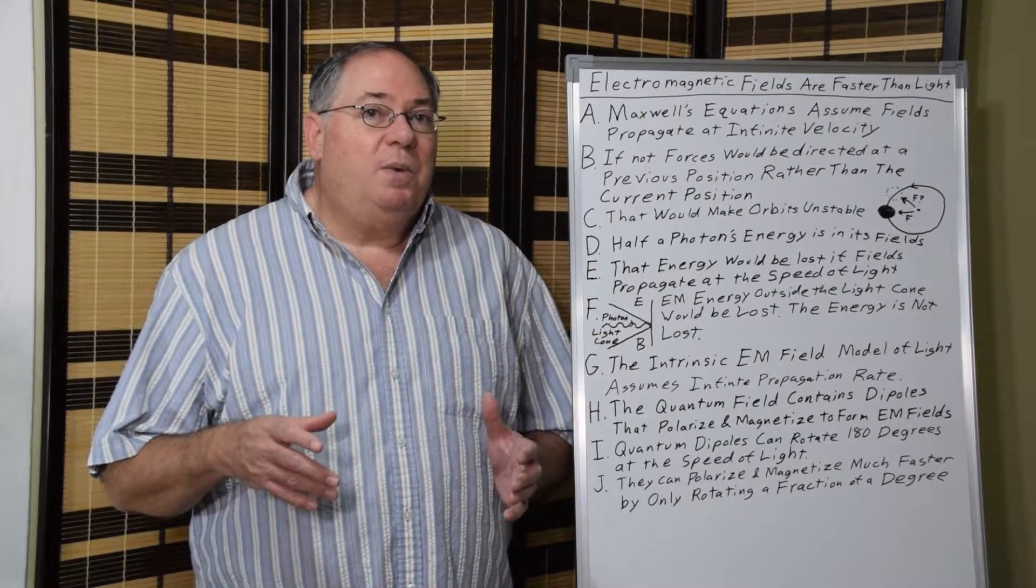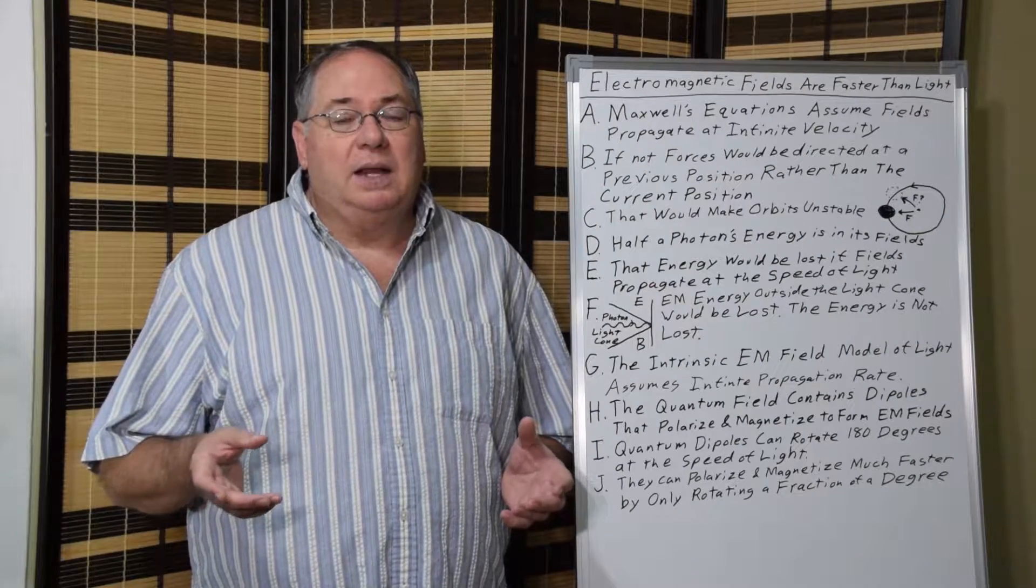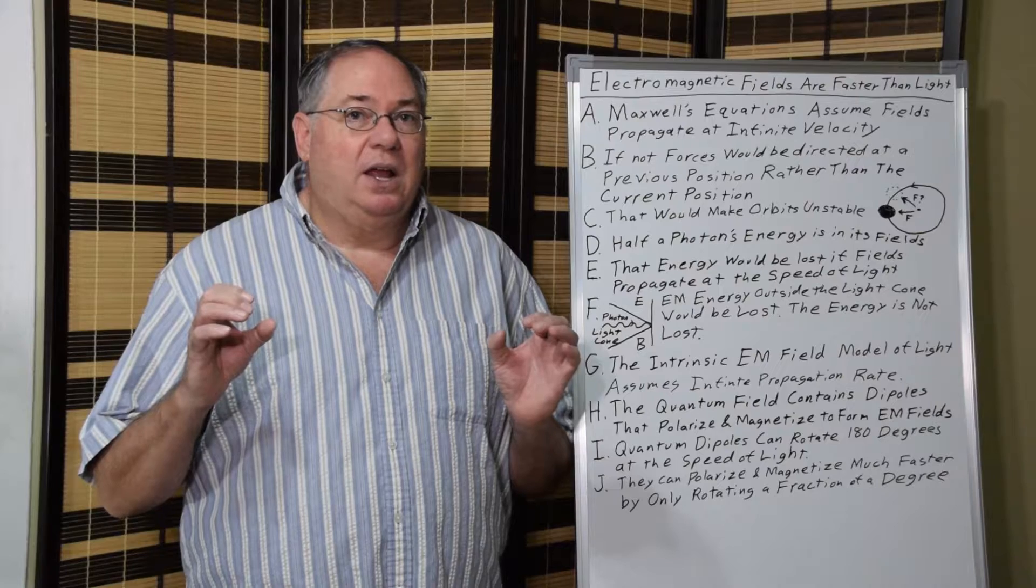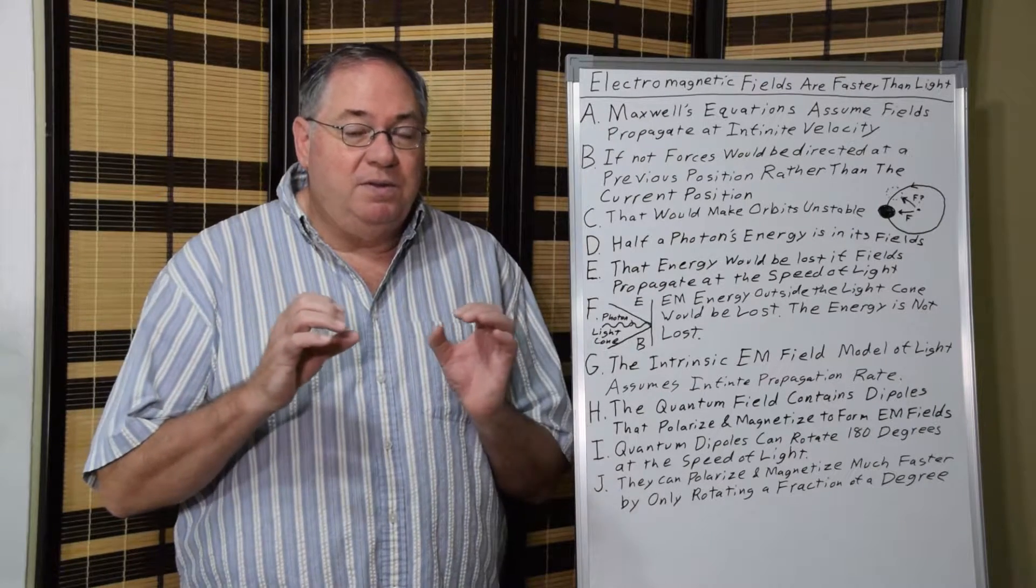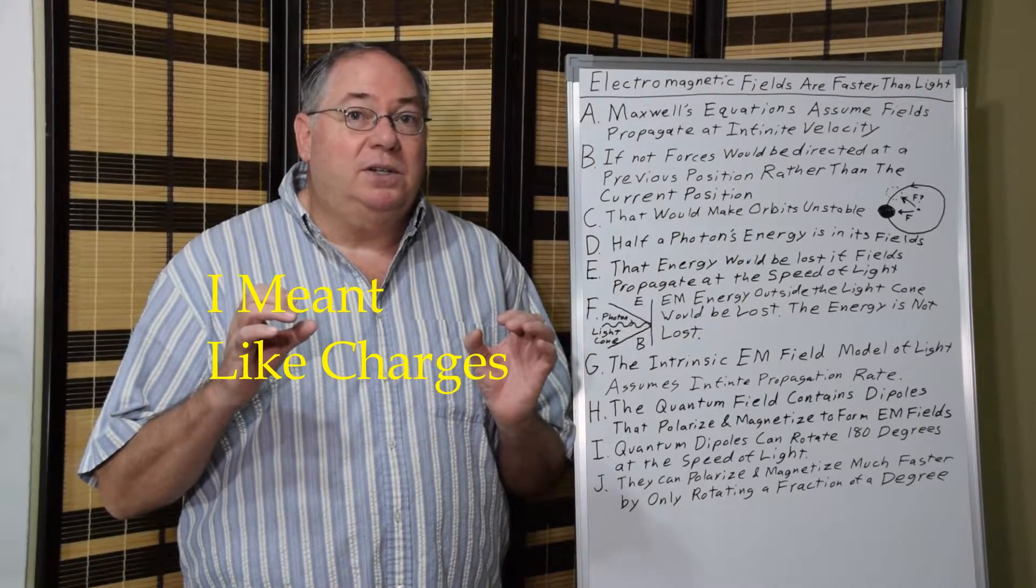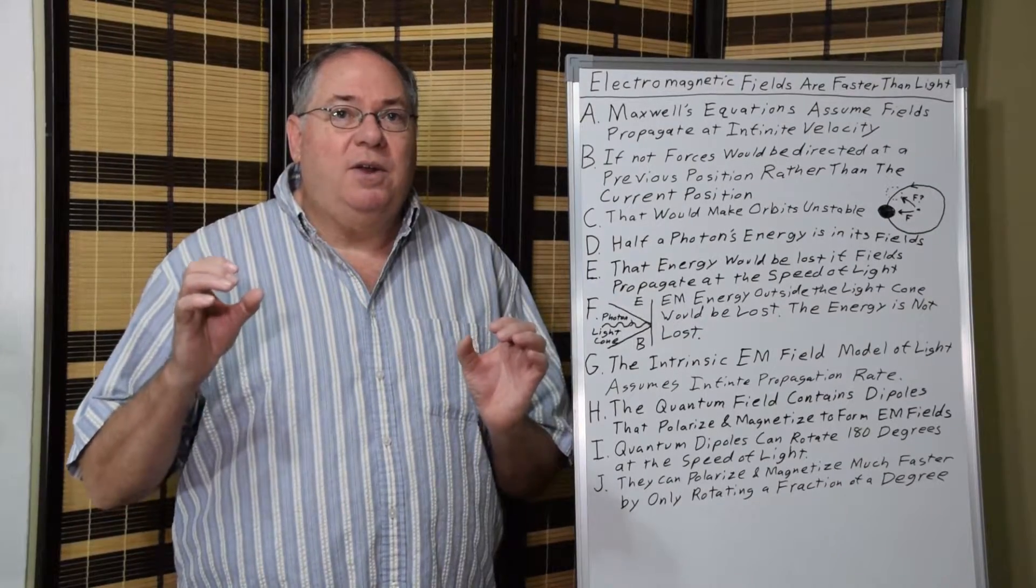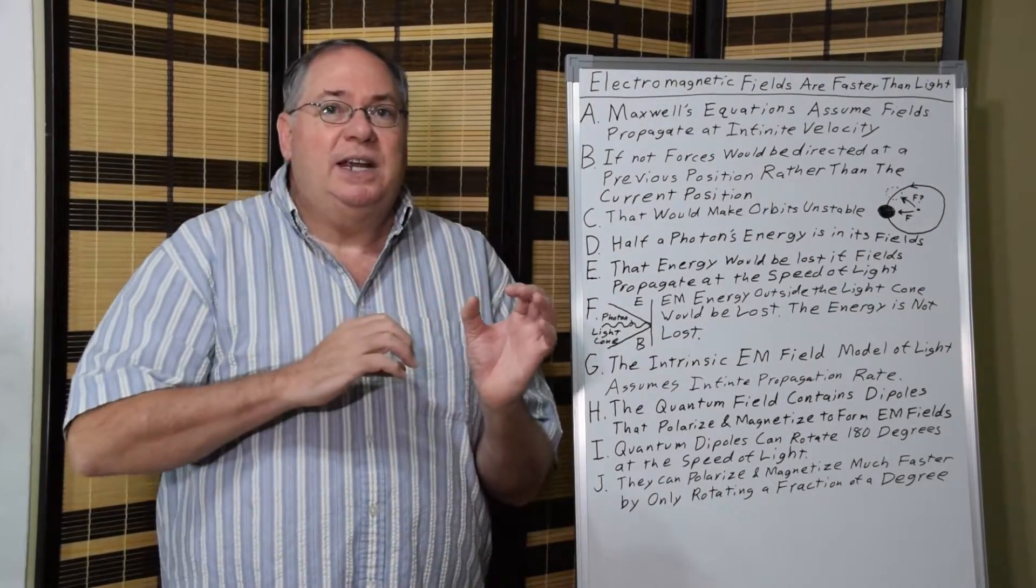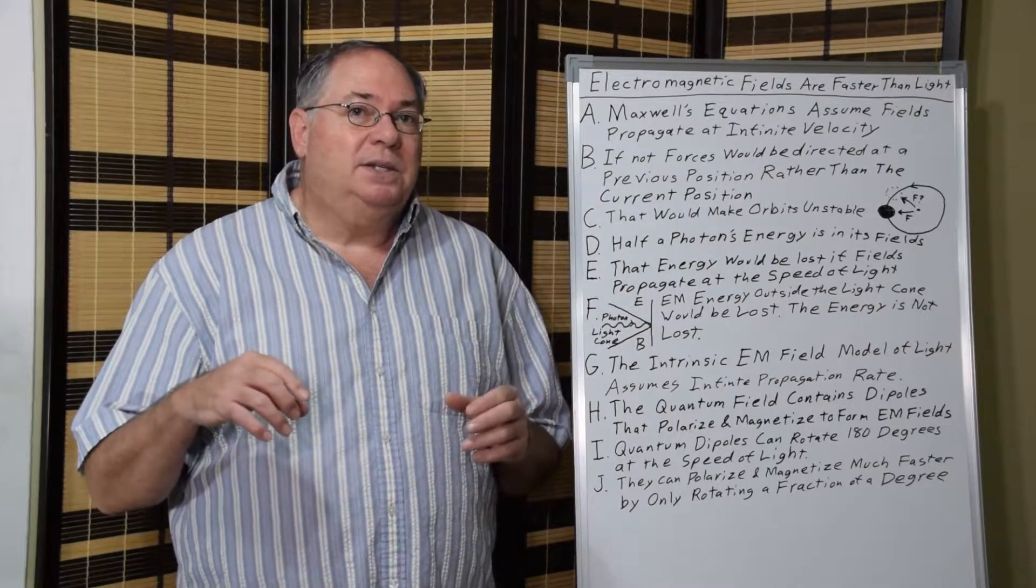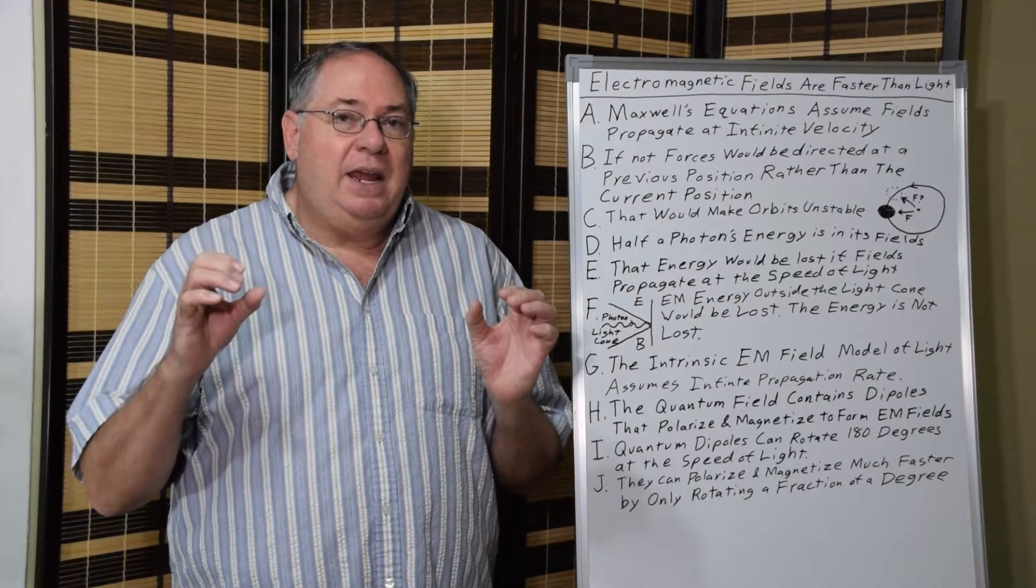We can see this with Coulomb's law, where you have two bodies of opposite charge that are attracted to each other. They'll move together. And if you have opposite charges, they'll move apart. But say they're attractive and you have a stable orbit. Say one is stationary just for argument.